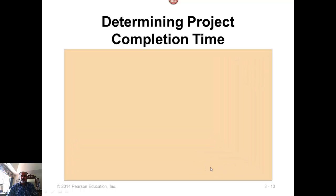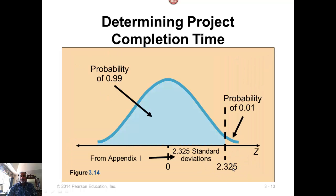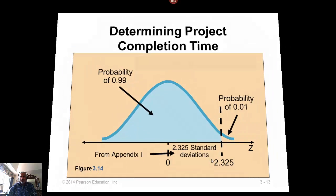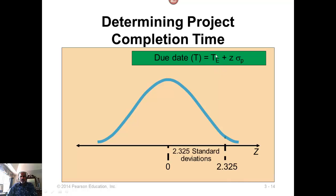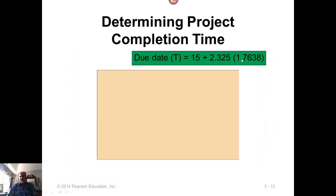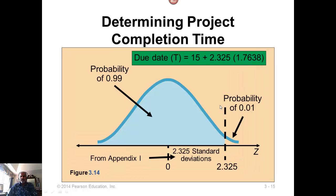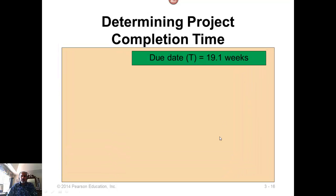You can turn this around and then say, probability is given and we want the due date for that probability. This is the probability of completion. Go to the normal distribution table and find Z. That Z is 2.325. Then, the due date is given by this formula: T sub E plus Z times sigma sub P. T sub E is 15, Z we just looked it up, 2.325, and then substitute sigma there, and you get your due date, which is 19.1 weeks.